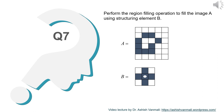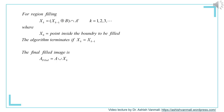Whenever you see problems of morphological image processing, be careful while writing them as 1s and 0s. The region filling algorithm is an iterative algorithm. For region filling, X_K is given as X_{K-1} dilated with B, and the result is then taken with the intersection of A complement, where K takes the value 1, 2, 3, etc. X_0 is a point inside the boundary to be filled, and the algorithm terminates if X_K is the same as X_{K-1}. The final filled image A_filled is given as A union X_K.